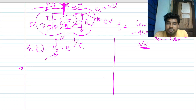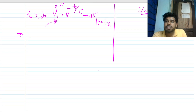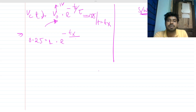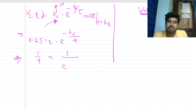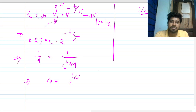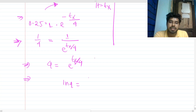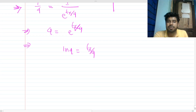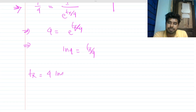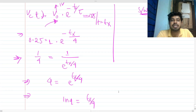We need Vx = 0.25 volts at time tx. So: 0.25 = 1 · e^(−tx/4). This gives 1/4 = e^(−tx/4), so 4 = e^(tx/4). Taking the natural log: ln4 = tx/4, therefore tx = 4·ln4. That is one of the answers.